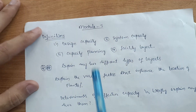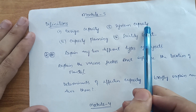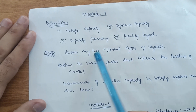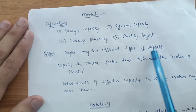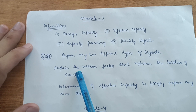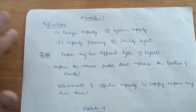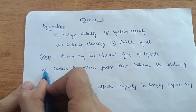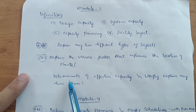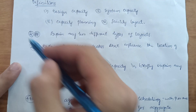In Module 3, some important definitions include design capacity, system capacity, and capacity planning. Facility layout is important — explain any two different types of layouts. The next important question is: explain the various factors that influence the location of plants. Also cover the determinants of effective capacity and briefly explain any two of them. This much content is enough for Module 3.